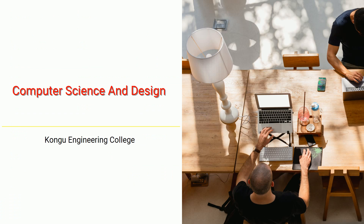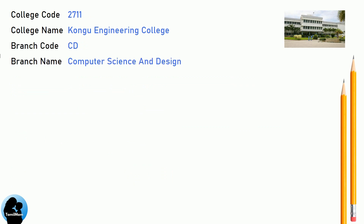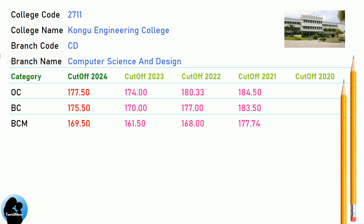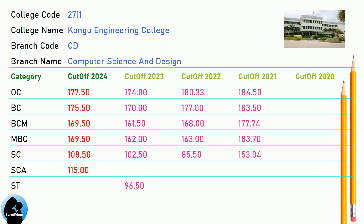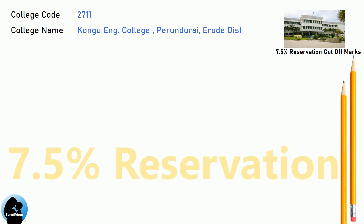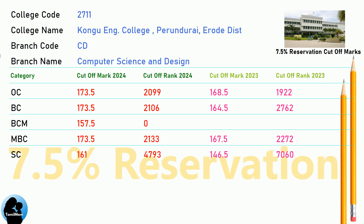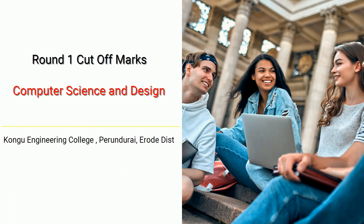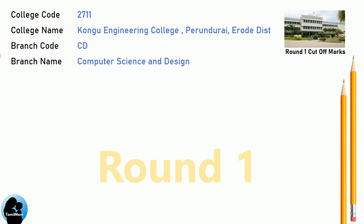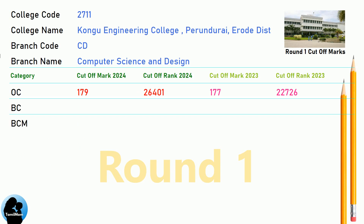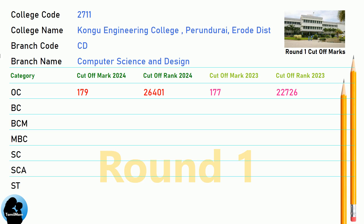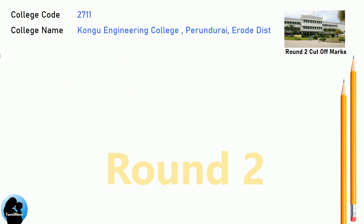DNA cutoff for Kongu Engineering College in Computer Science and Design. DNA 7.5 reservation cutoff for Kongu Engineering College in Computer Science and Design. DNA Round 1 cutoff and DNA cutoff for Kongu Engineering College in Computer Science and Design.